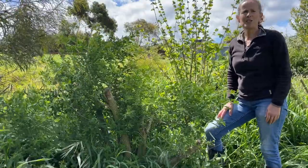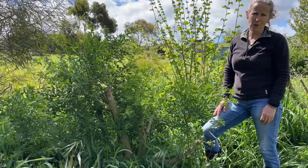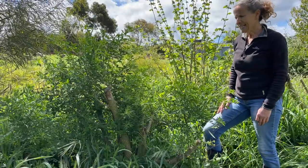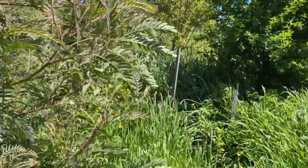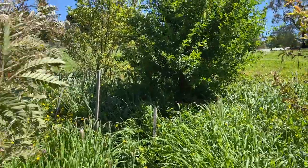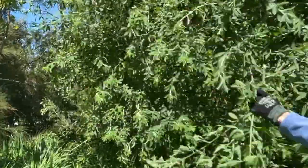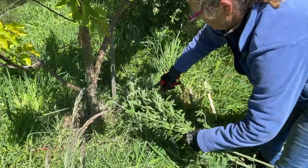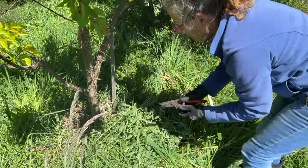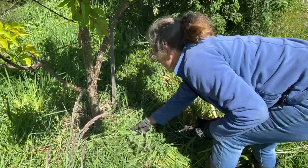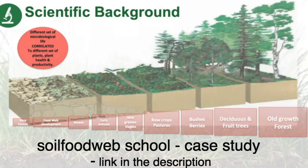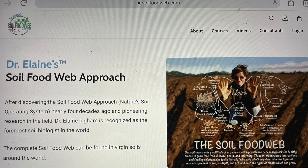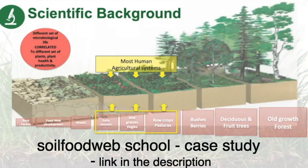In permaculture we use many techniques that help support the soil food web. One of these is the chop and drop — we grow fast-growing species of plants to be used as a source of mulch, chop them and drop them to the ground where they support soil formation. What we are doing here is moving the soil through succession. I've taken this image from a case study on the Soil Food Web Schools website — the link's in the description. It's a fantastic explanation of succession and the impact of ploughing on the soil.